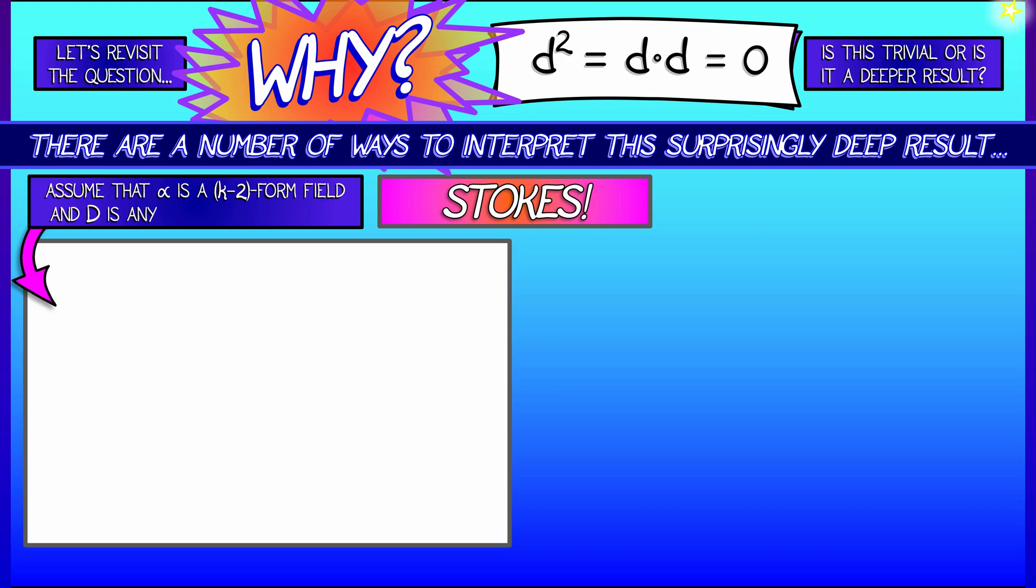This is kind of a weird way to think. What do I mean by that? Well, let's say that alpha is a k-2 form field, and d is a k-dimensional domain in R^n. Now, stick with me for a minute. What happens if we take d alpha and integrate it over the boundary of d? Can we do that? Do the dimensions match up?